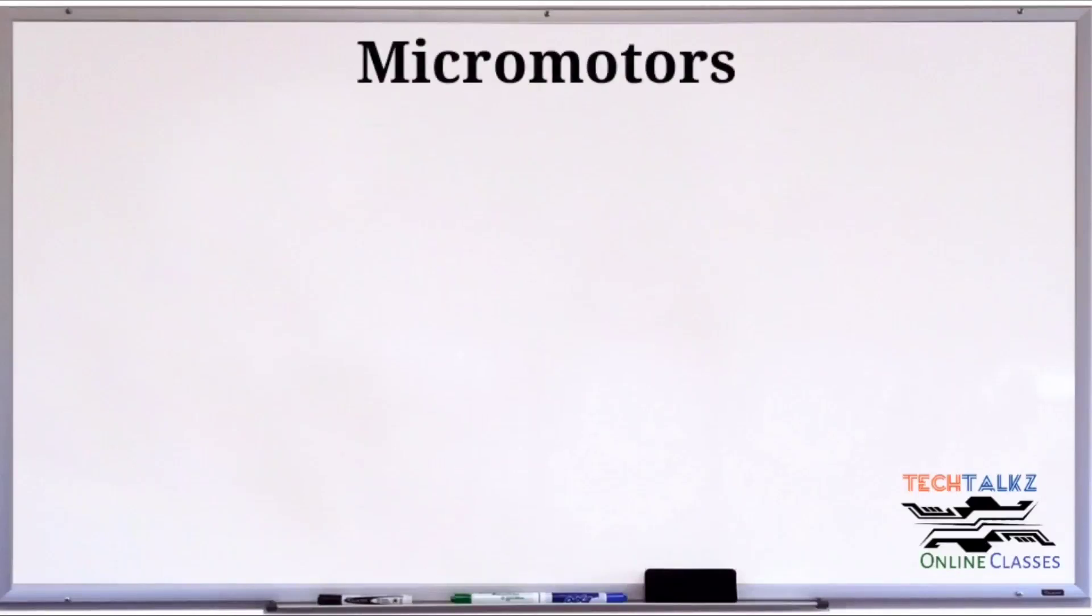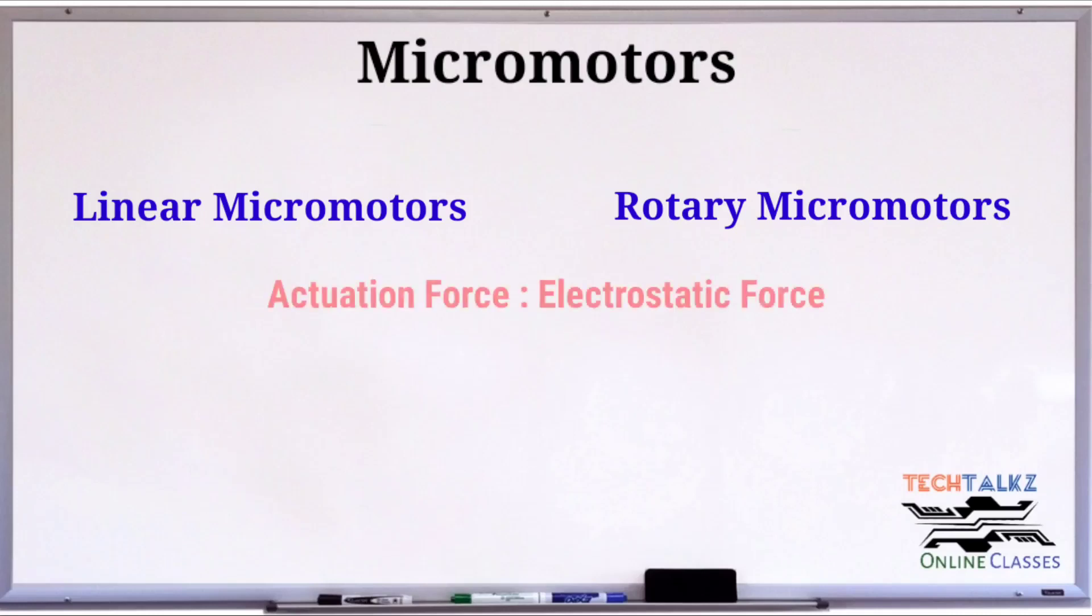The next topic is micromotors. There are two types of micromotors: linear motors and rotary motors. The actuation forces for micromotors are primarily electrostatic forces, and the sliding force is generated in pairs of electrically energized misaligned plates.